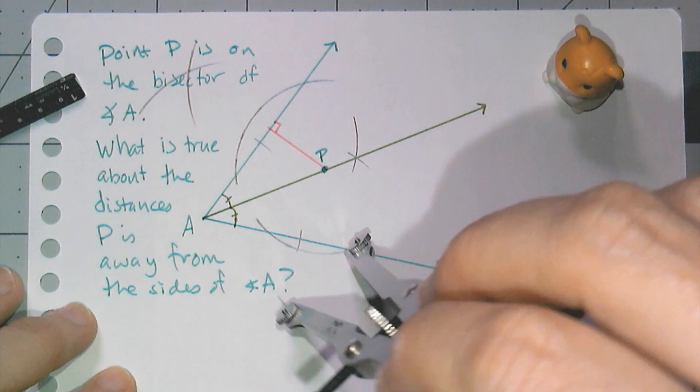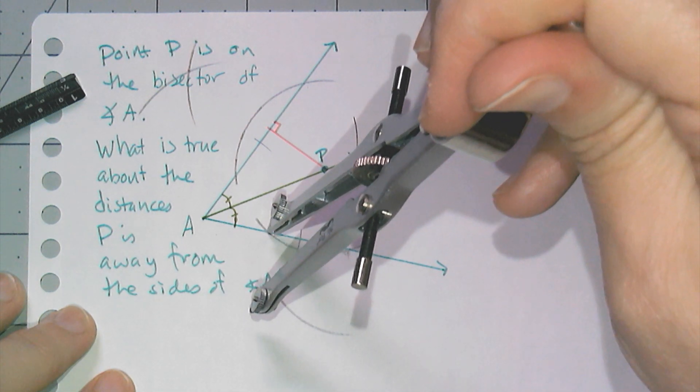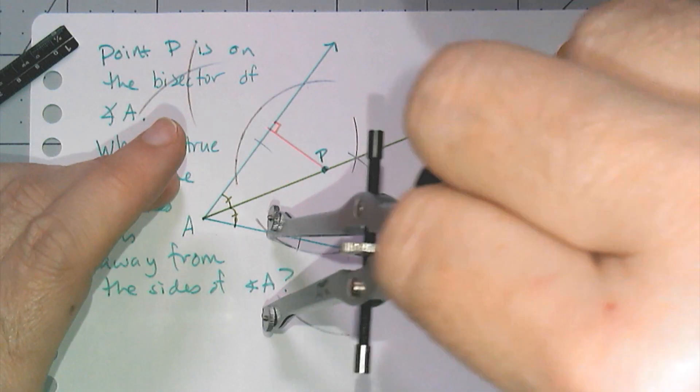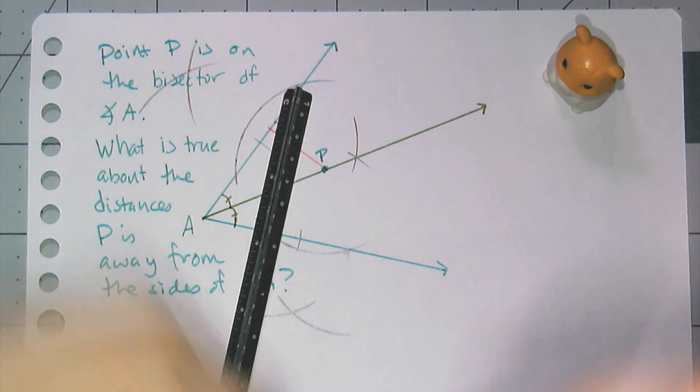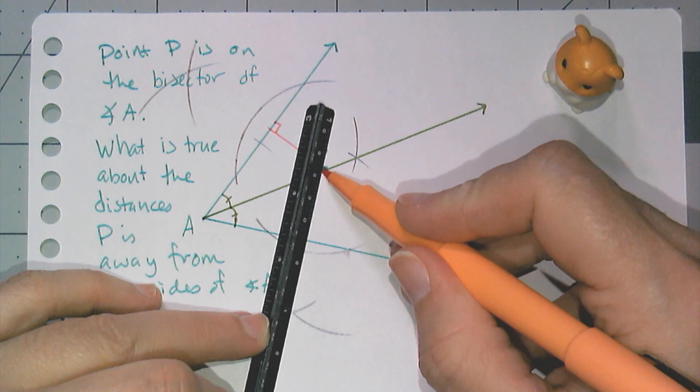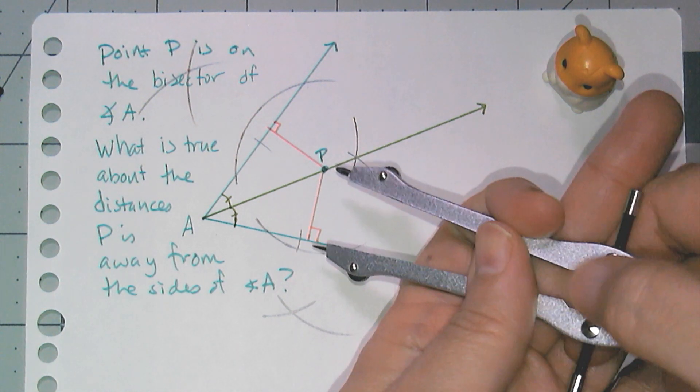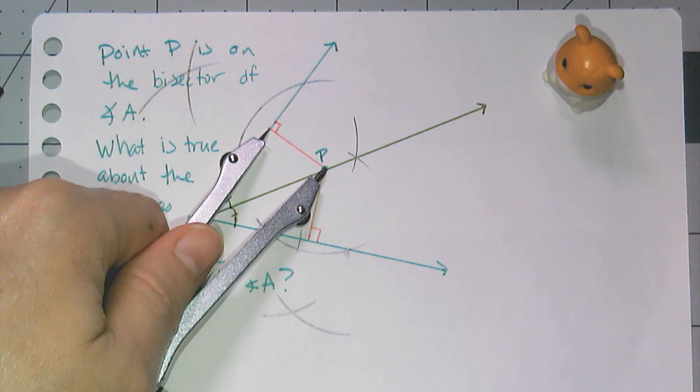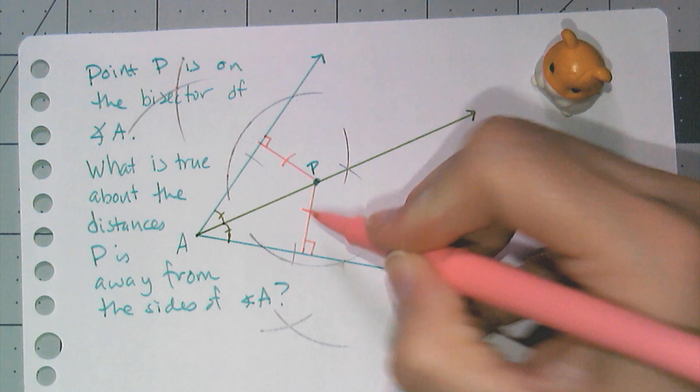Remember, any two points form a line, so these two intersecting arcs down here give me the second point that I need to create this perpendicular distance. If I want to know what's special about these two distances, I can of course use my compass to measure these lengths, and I believe they are the same.